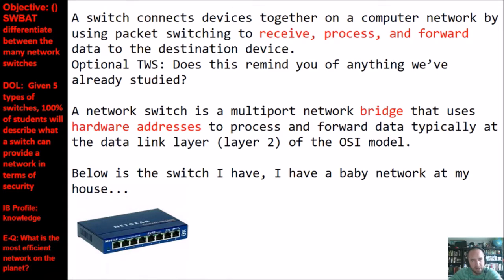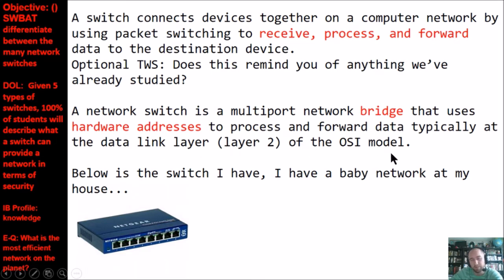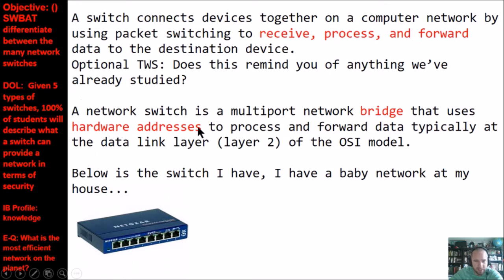A network switch is a multi-port network bridge that uses hardware addresses to process and forward data, typically at the data link layer of the OSI model. Notice I say hardware address — what's the opposite of a hardware address? That would be an IP address. So the switch is looking at the MAC address. Below is the switch that I have at my house.